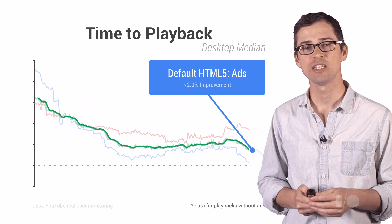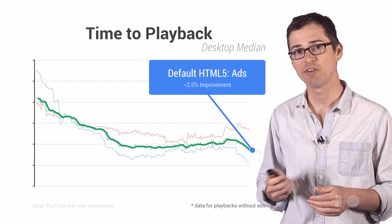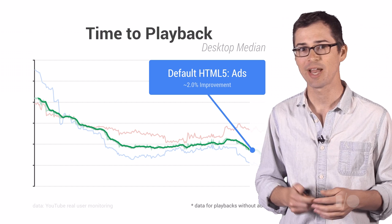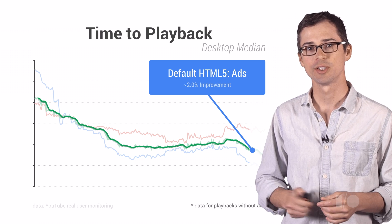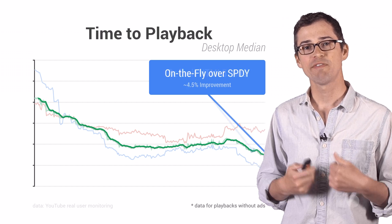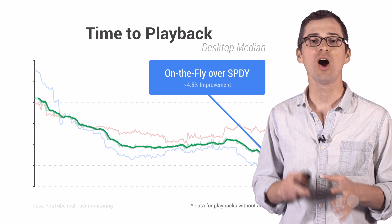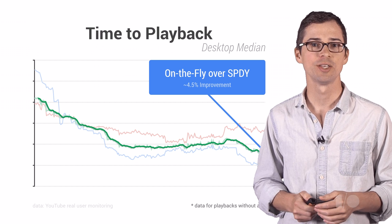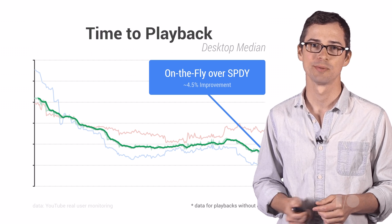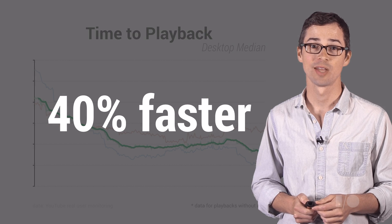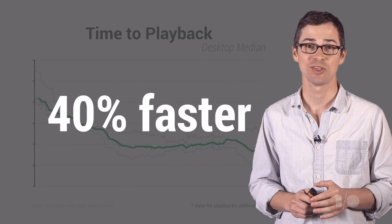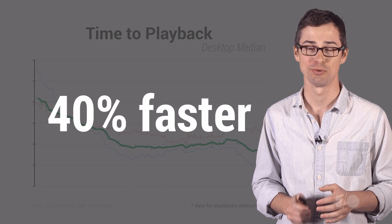When we expanded our default HTML5 player to both videos with and without ads, we yielded a 2% improvement. And finally, enabling on-the-fly processing over SPDY yielded a 4.5% speedup. And that's how we made it 40% faster to play a video on YouTube.